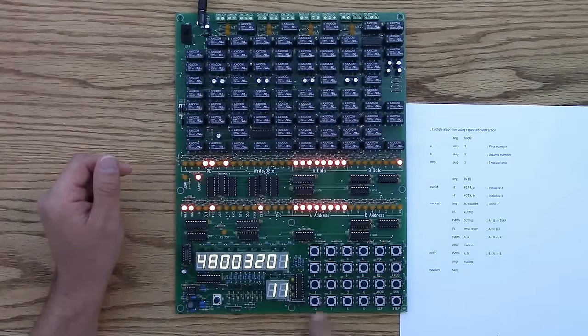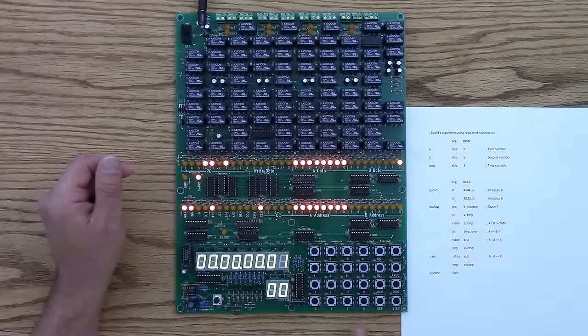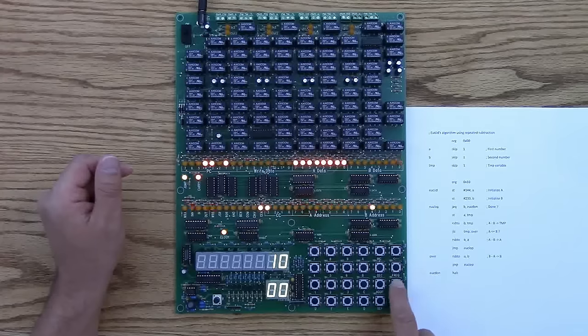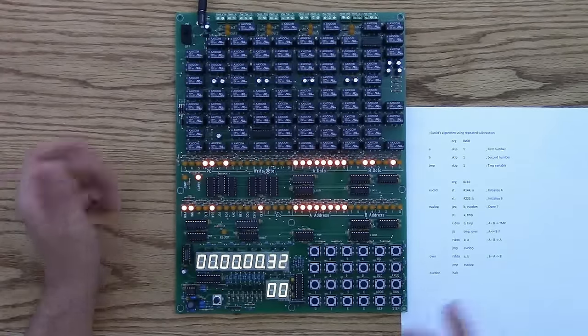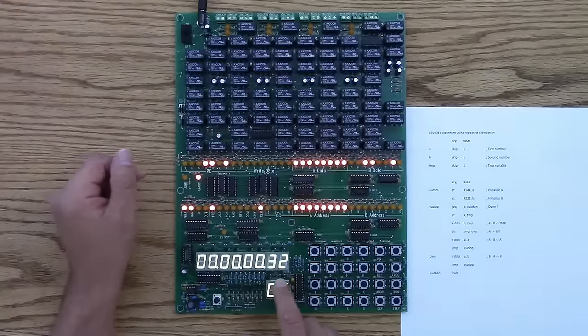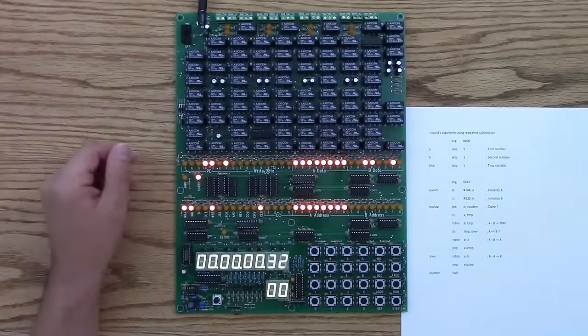Now let's set the address back to zero so we can monitor the variables. And run this. It doesn't run for very long because the greatest common divisor between 64 and 32 is 32, which is 50 decimal.